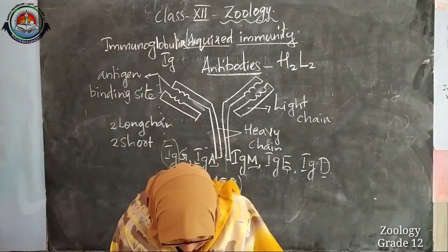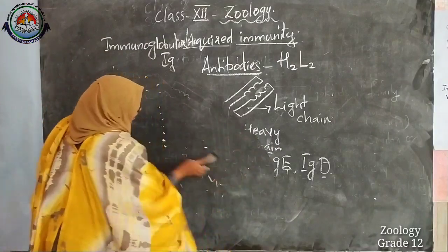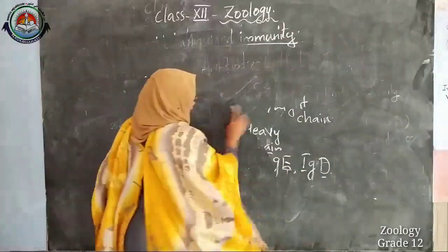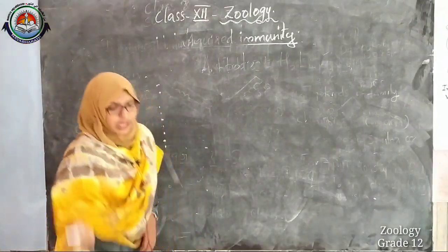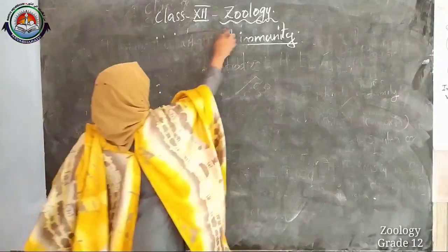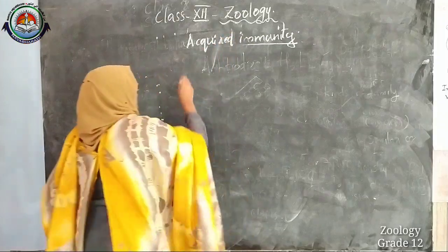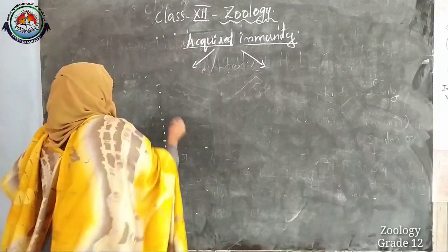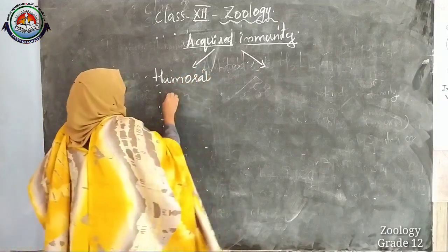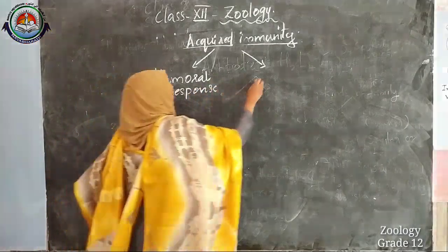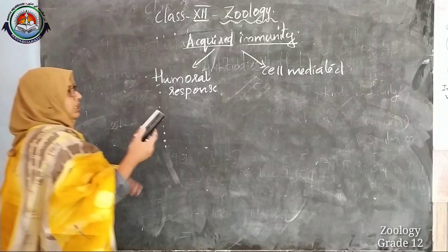That is all about antibodies — their different types and structure. All these you have to write and draw the figure in your notebook. Acquired immunity is of two types based on their response: humoral response and cell mediated response, also known as cell mediated immunity.